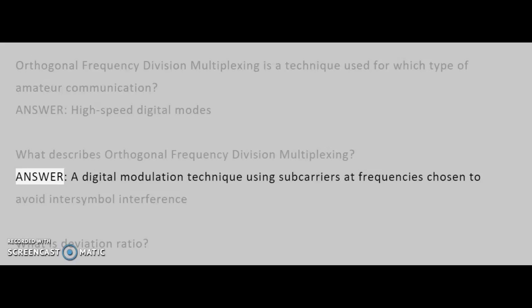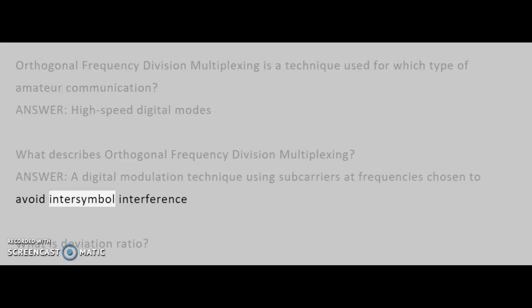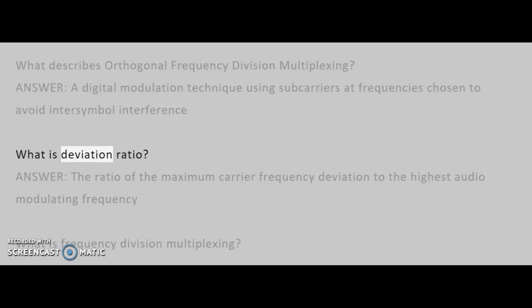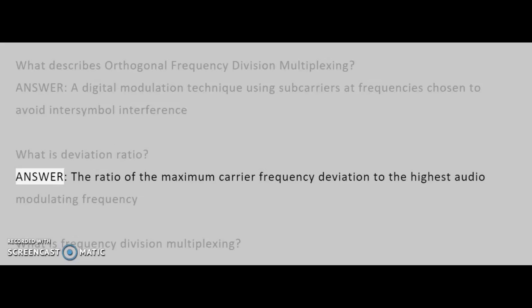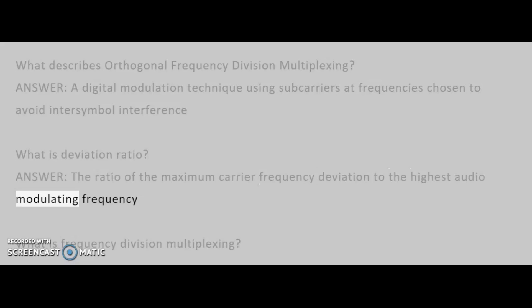Answer: A digital modulation technique using subcarriers at frequencies chosen to avoid inter-symbol interference. What is deviation ratio? Answer: The ratio of the maximum carrier frequency deviation to the highest audio modulating frequency.